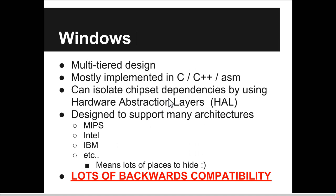Windows is a multi-tier design with lots of layers. It's mostly implemented in C, somewhat in C++, and a little bit in ASM. Because it's mostly in C, it could be considered not an object-oriented operating system. Windows isolates chipset dependencies using hardware abstraction layers, allowing it to be deployed on diverse hardware with generally the same operation and features — it's designed to support many architectures: MIPS, Intel, IBM. All that support means lots of drivers, and that means lots of places to hide.